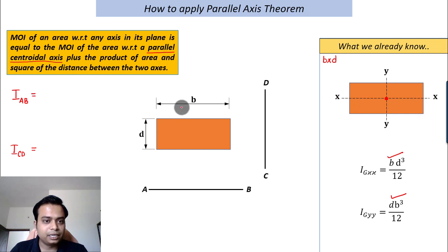What we want to do is find the moment of inertia about axis AB. By observing this rectangle, you can see that the centroid will be somewhere here. We'll make a line absolutely parallel to AB, something like this, and let's call this xx.